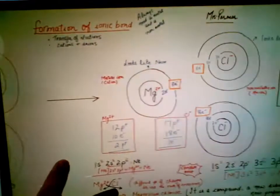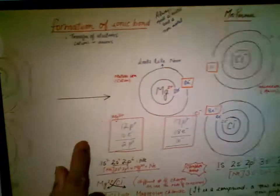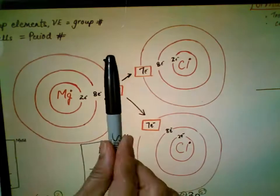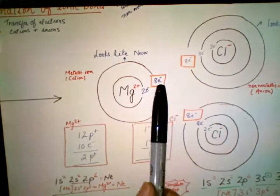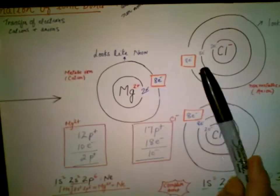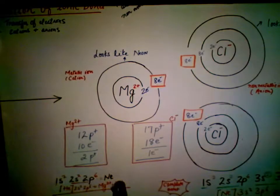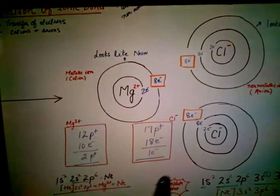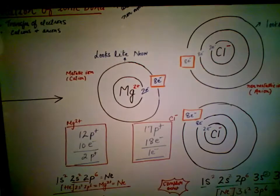When the magnesium ion loses two electrons, it ends up with eight valence electrons — that's exactly what happened here. Similarly, chlorine had seven valence electrons and now has eight. Since magnesium lost two electrons, it has two extra protons, which is why it carries a 2+ charge. Each chlorine atom gains one electron, giving it a 1− charge.